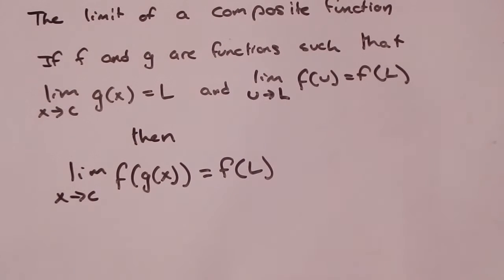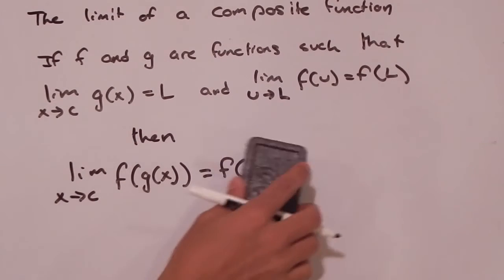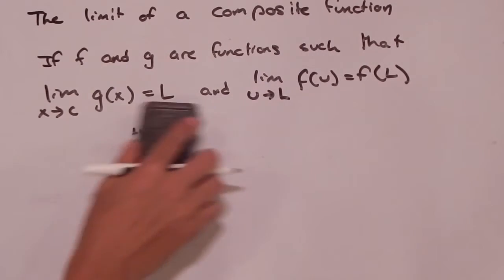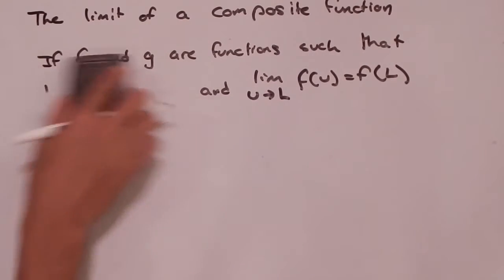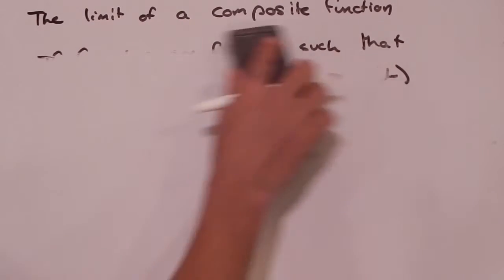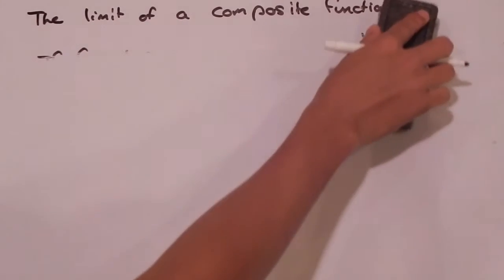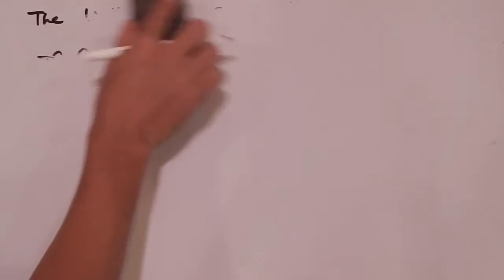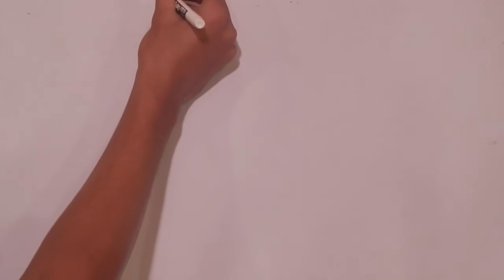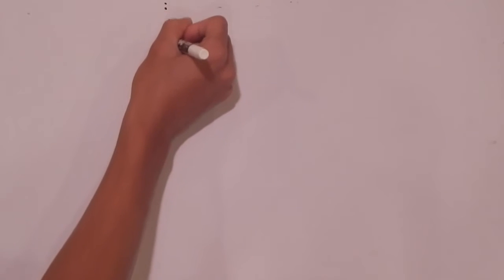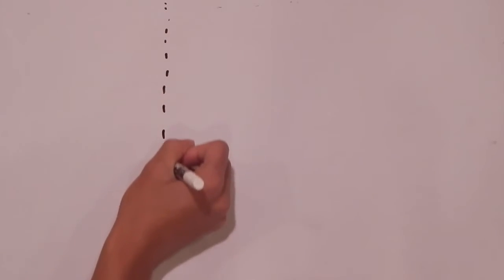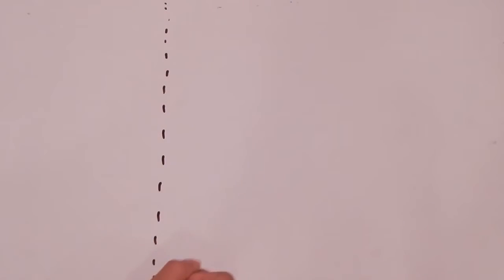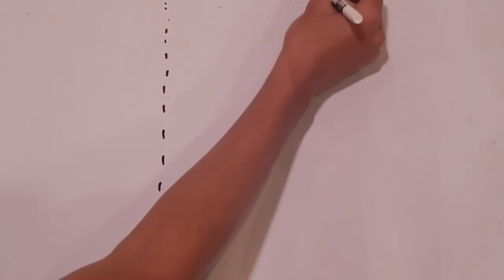To do that, I'm going to erase this to make some more room, and we're going to look at the two given limits, see what they show us, and see how we can use them to prove that third limit. I'm going to divide this board into three columns.